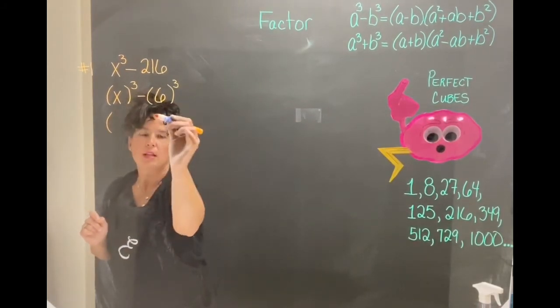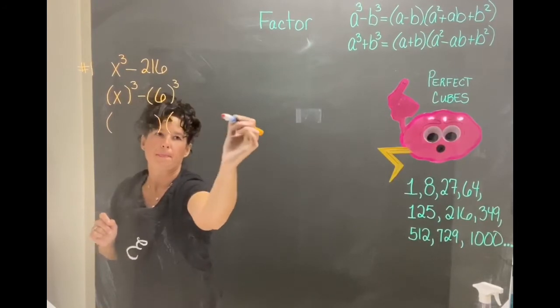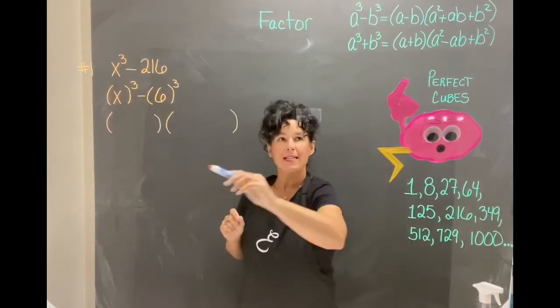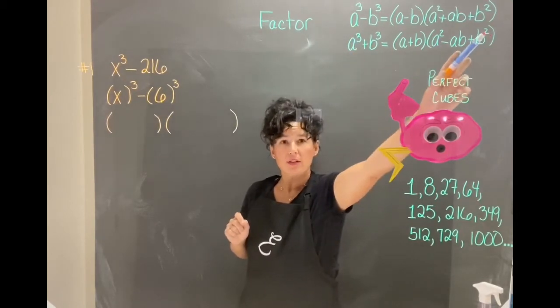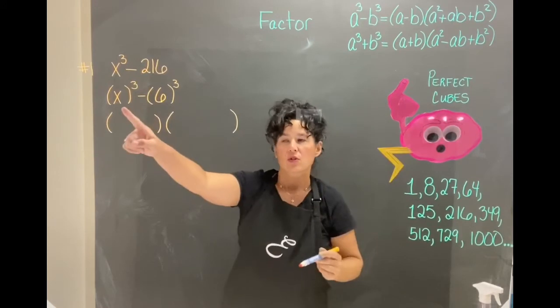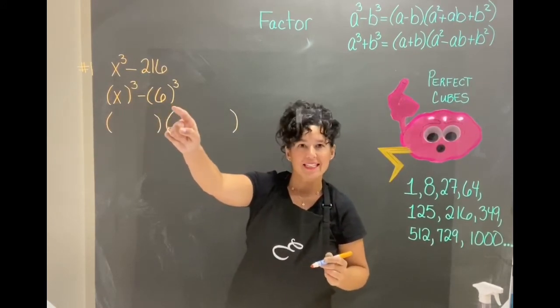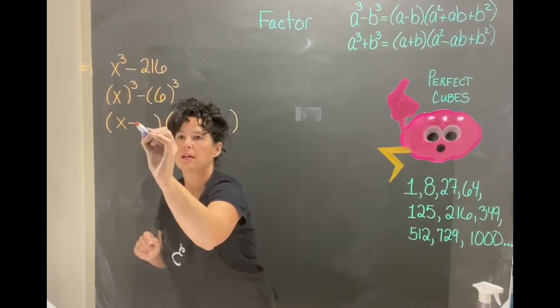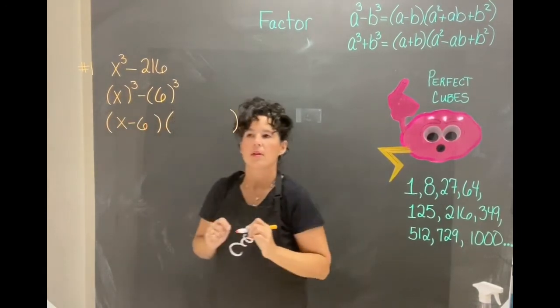Following our formula, we have a minus in the middle so we're following the difference of cubes. We have a minus in the middle so that will be x minus 6.